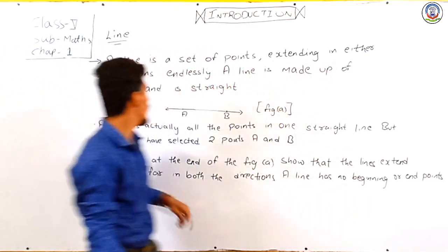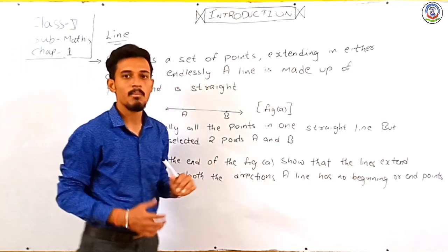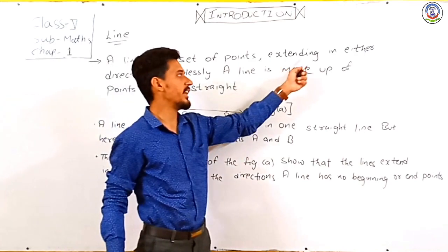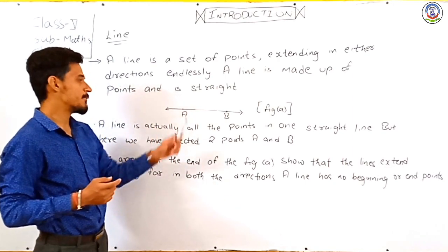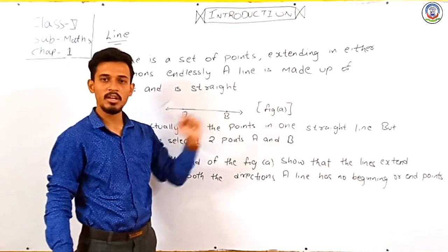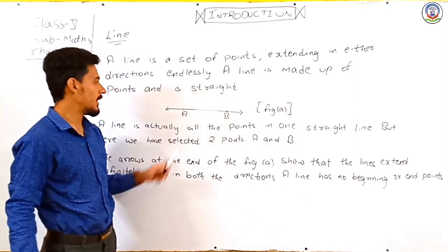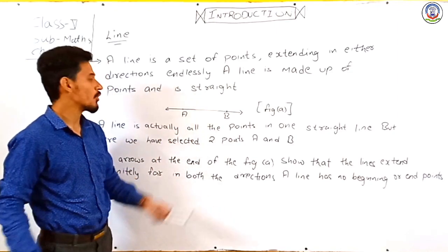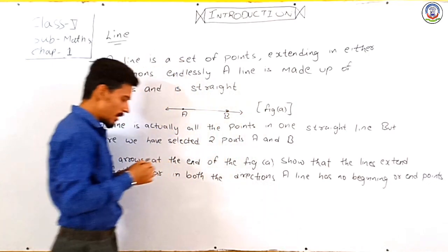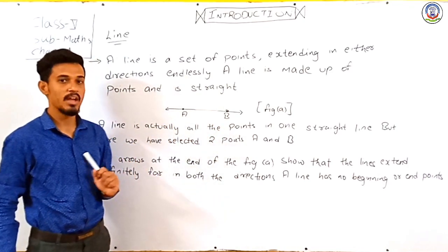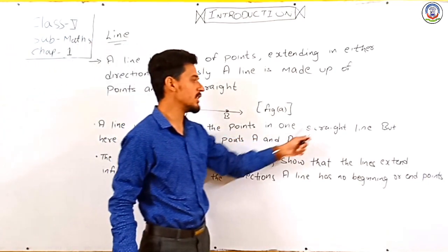A line is a set of points extending in either direction endlessly. Here we have point A and point B. A line is actually all the points lying in one straight line.